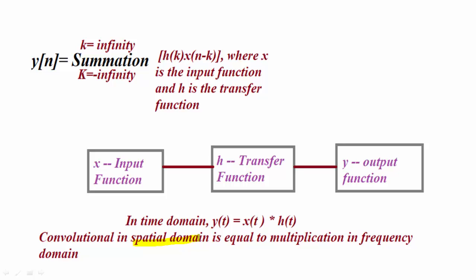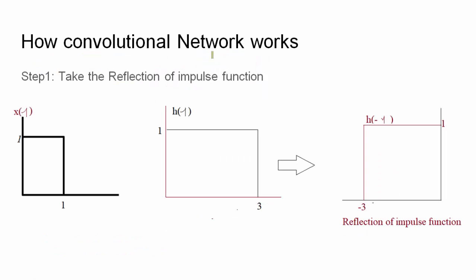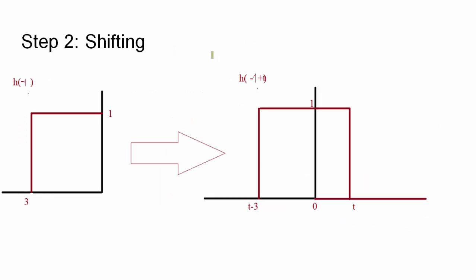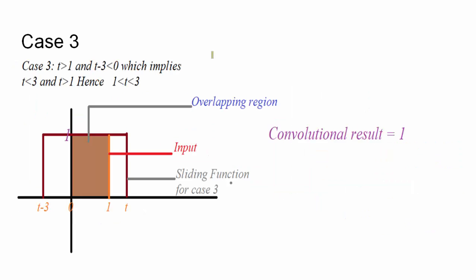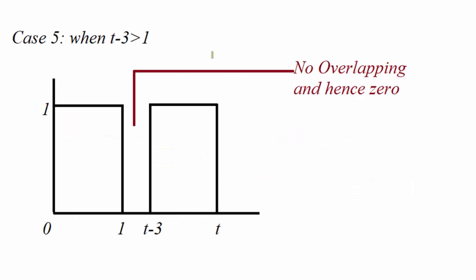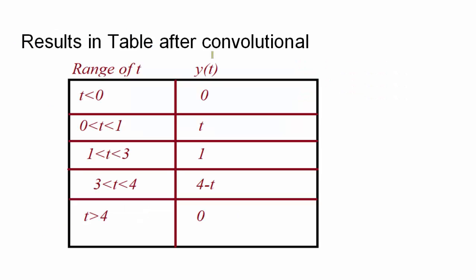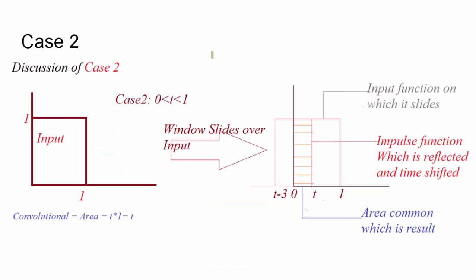Now let us see the mathematical expression of convolution: y(n) is equal to the summation, where k lies between minus infinity to plus infinity, of h(k) — the impulse response — multiplied by x(n − k). This is the shifting. How the shifting is done and how such an algorithm is calculated — I have a beautiful example to explain, with detailed steps on how overlapping is done, how the area is selected, how the cases are handled, and how to tabulate results for different ranges of t.